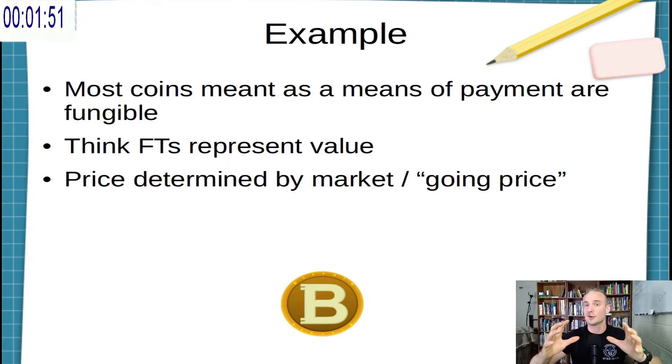The vast majority of cryptocurrencies and even cash that you're familiar with is fungible. Bitcoin, for example, has one price. Think of it as a store of value, a means of payment.